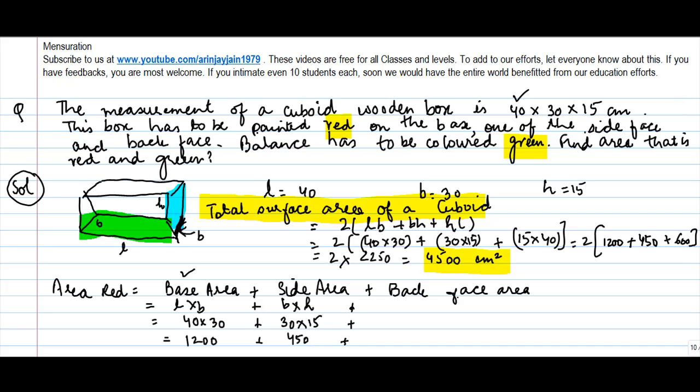Back face area. Which is the back face? This is the back face. Again, the back face and front face in a cuboid are same or not? Yes, they are the same. So, basically, what does this back face comprise of? This will comprise of this length and this height. So, this is going to be length into height, or 40 into 15, 600. You do a sum of these three, you get 2250 centimeter square.